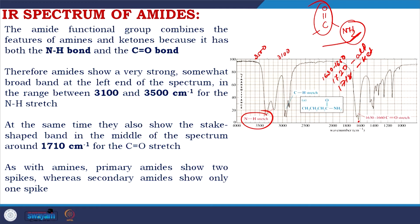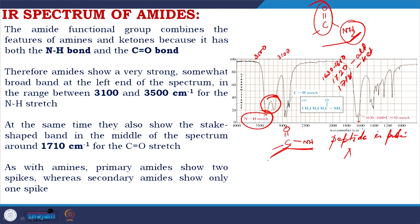Primary amides show two spikes and secondary amides show only one spike for the NH stretch. Importantly, the amide band has further significance because peptides in proteins have the amide group. There are amide 1 and amide 2 characteristic bands which help experimentalists detect the secondary structure of the protein using IR spectroscopy.